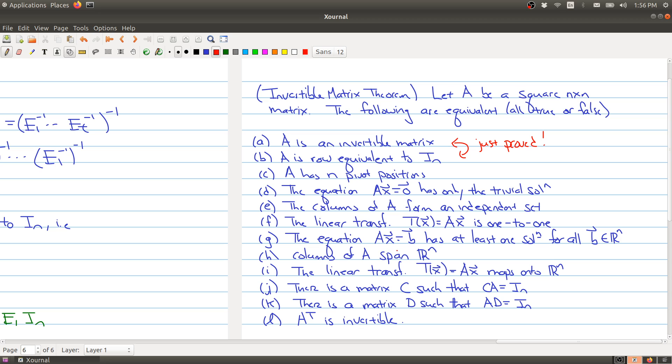The equation Ax equals B has at least one solution for all B in R^n, and let me just remark that we actually saw this last class. We proved part of this last class.